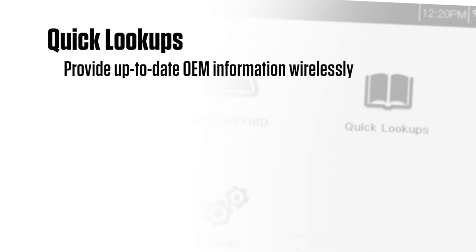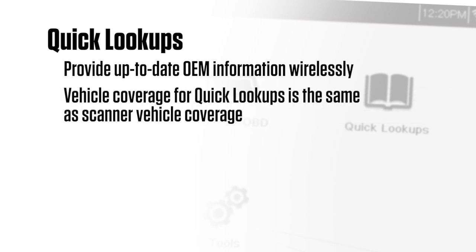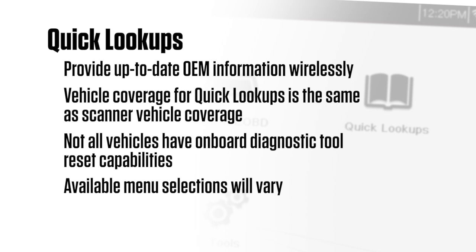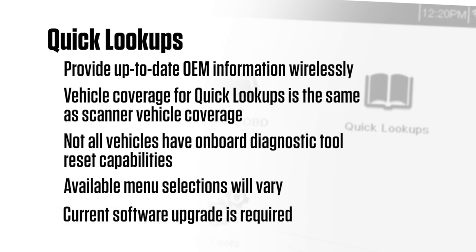Quick Lookups are integrated Wi-Fi functions that provide up-to-date OEM information on your Diagnostic Tool via wireless network connection to the Snap-on network over the Internet. Vehicle coverage for Quick Lookups is the same as scanner vehicle coverage. Not all vehicles may have onboard Diagnostic Tool reset capabilities or have information available. To use the Quick Lookups feature, you must have the current software upgrade installed on your Diagnostic Tool.